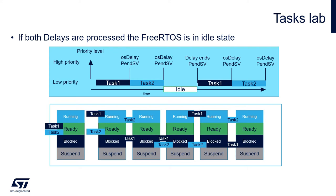OSDelay sends task one to the blocked state by triggering the PendSV software interrupt to switch the context. PendSV selects task two as the next one to be executed. Task two performs its operation, sending task_action with argument two, and again calls OSDelay with 1000 ms. This again triggers the PendSV software interrupt, which selects the only ready task — the idle task.